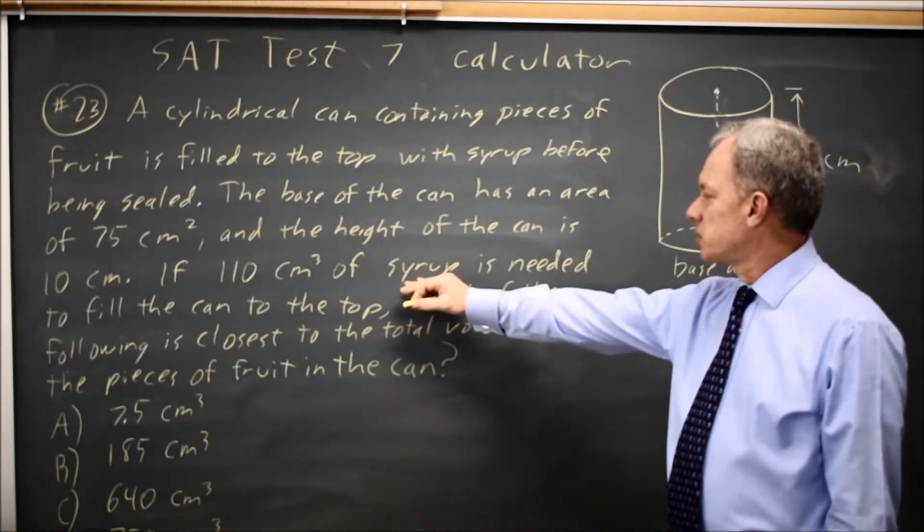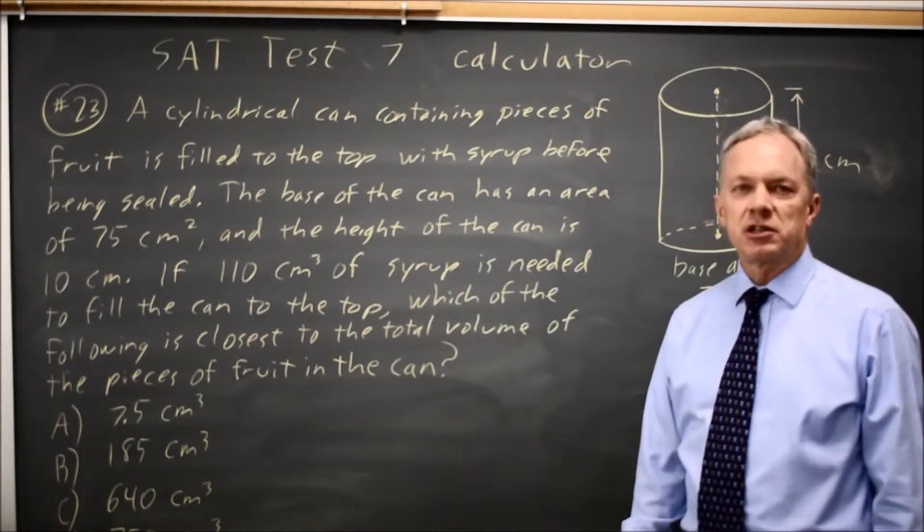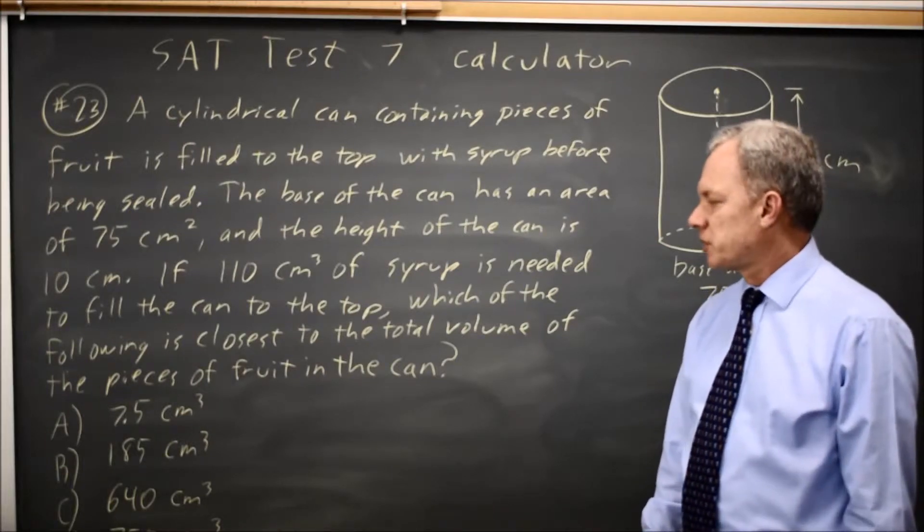If 110 cubic centimeters of syrup is needed to fill the can to the top, which volume is closest to the total volume of the pieces of fruit in the can?